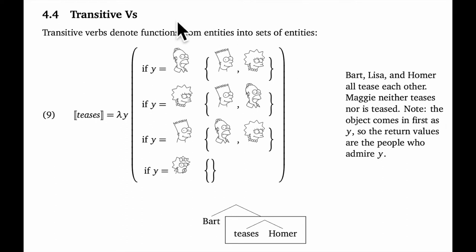Now on to transitive verbs. Transitive verbs are those that take a direct object, like teases and admires. These are more complex. These are the first meanings that we'll see that actually denote functions. Intuitively, you should think of a transitive verb as taking in the meaning of the direct object to produce an intransitive verb meaning. In more technical terms, a transitive verb takes the direct object meaning as its argument to produce a set of entities.